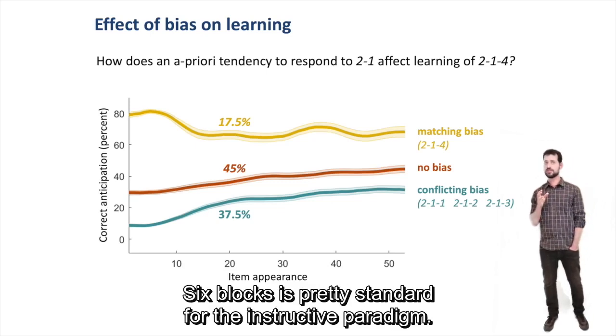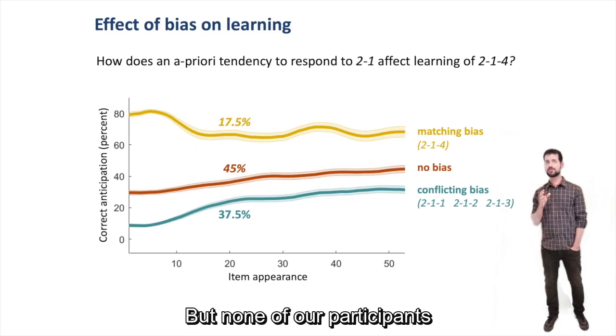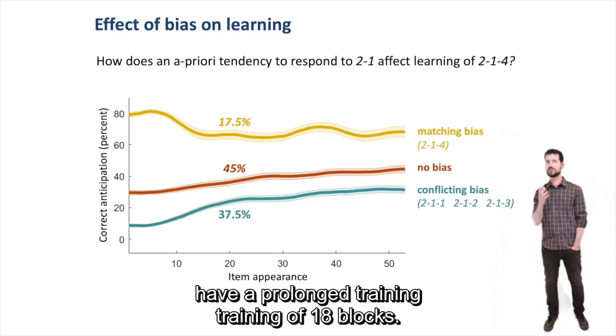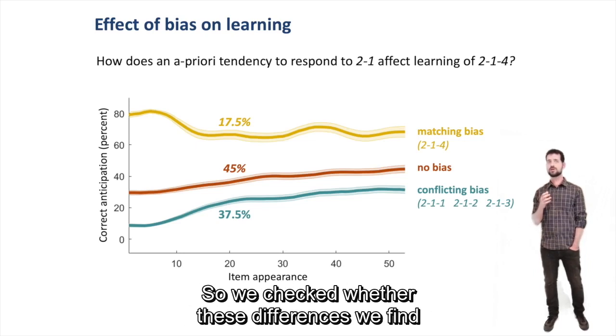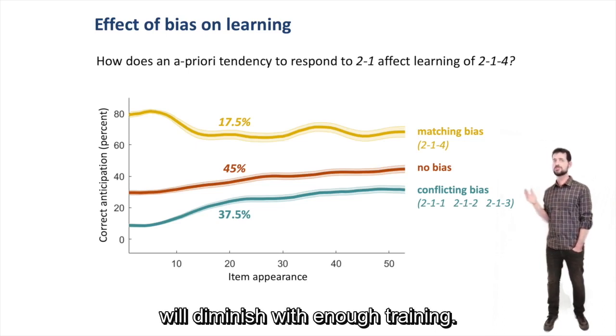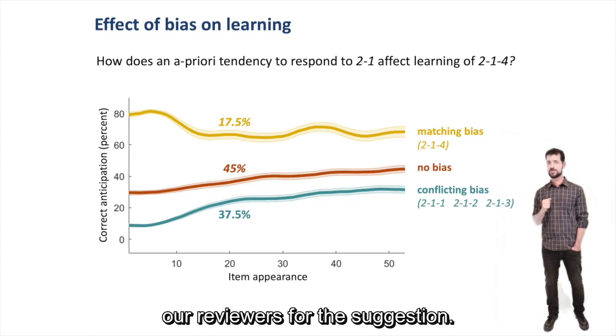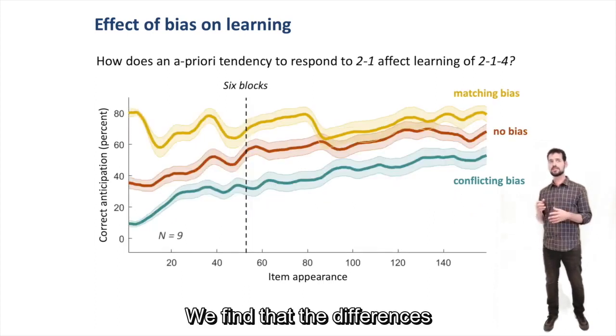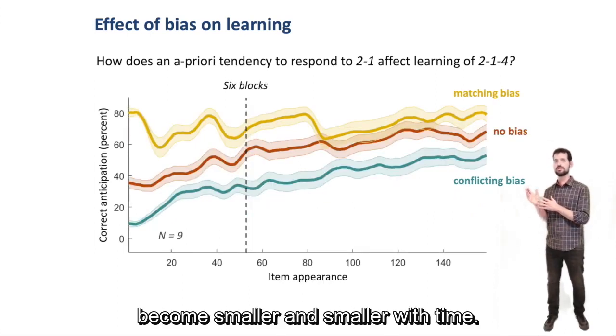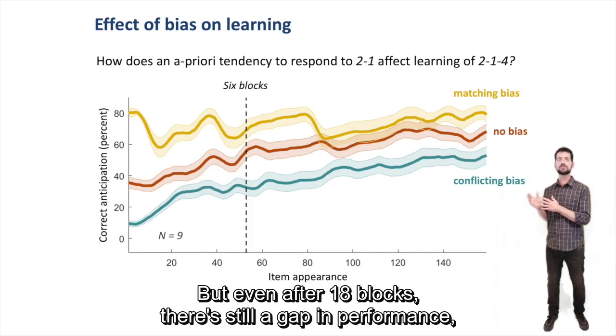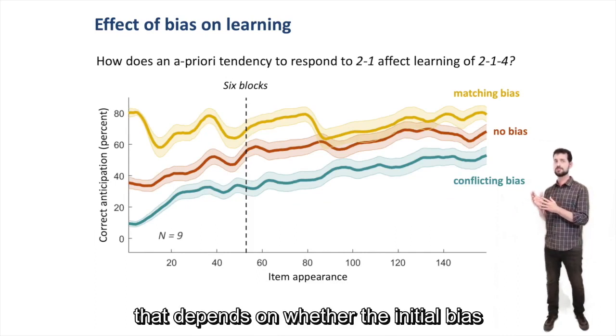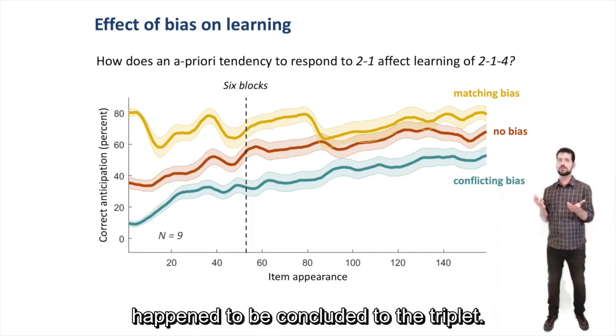6 blocks is pretty standard for the SRT paradigm, but 9 of our participants underwent long training of 18 blocks. So we checked whether these differences we find would diminish given enough training, and we thank our anonymous COGSCI reviewers for this suggestion. We find that indeed differences become smaller and smaller with time, but even after 18 blocks, there is still a gap in performance that depends on whether the initial bias happened to be congruent with the triplet.